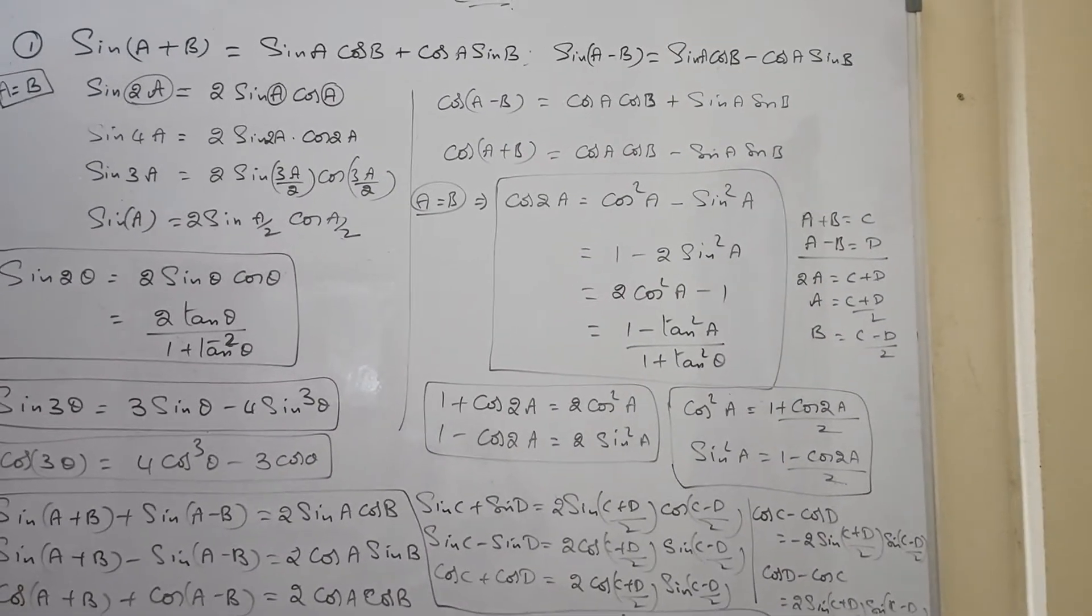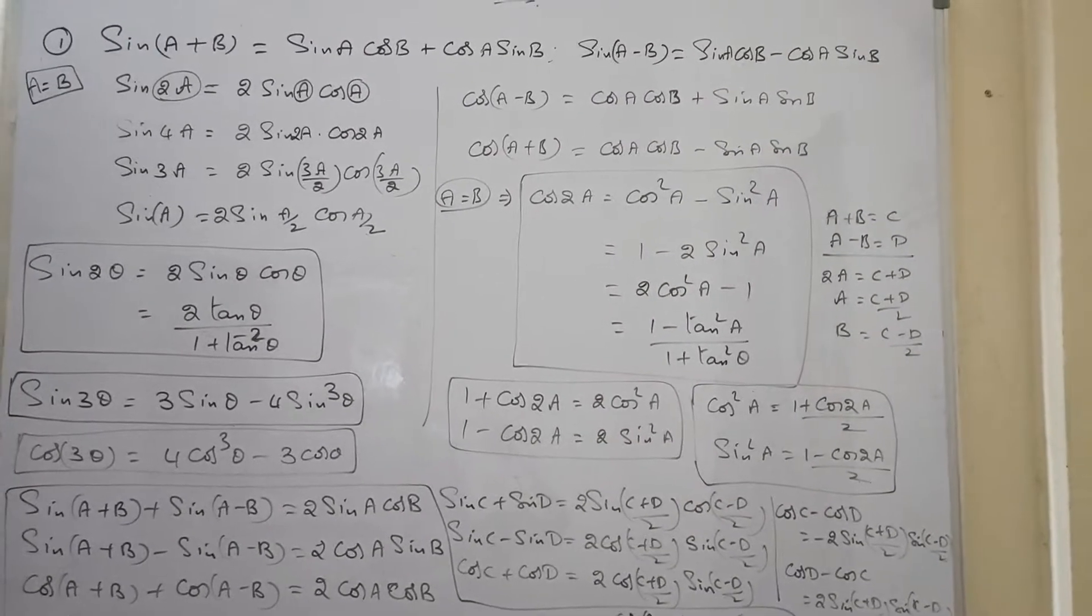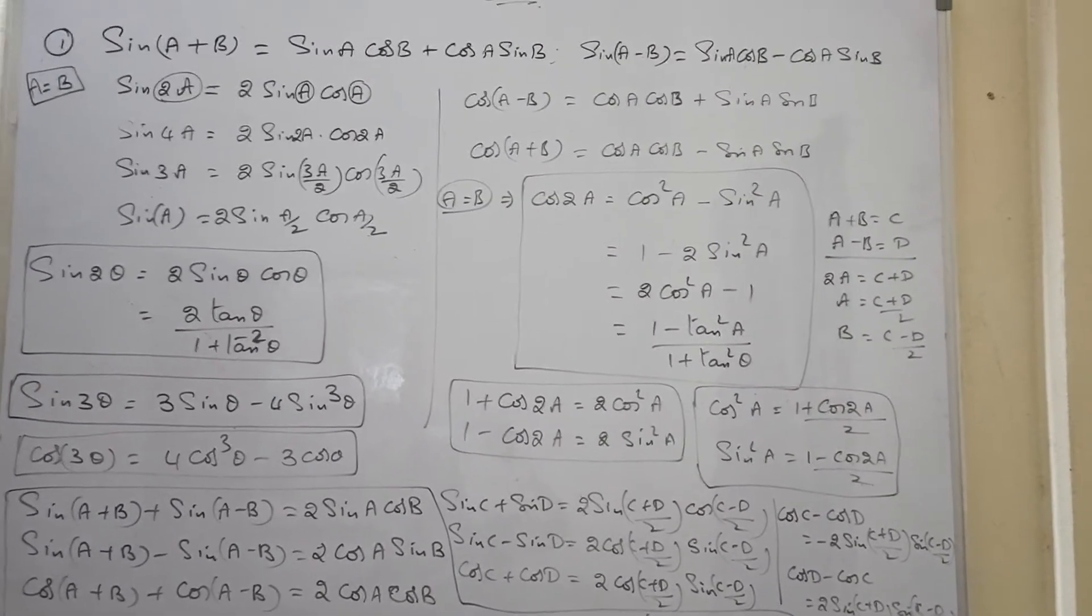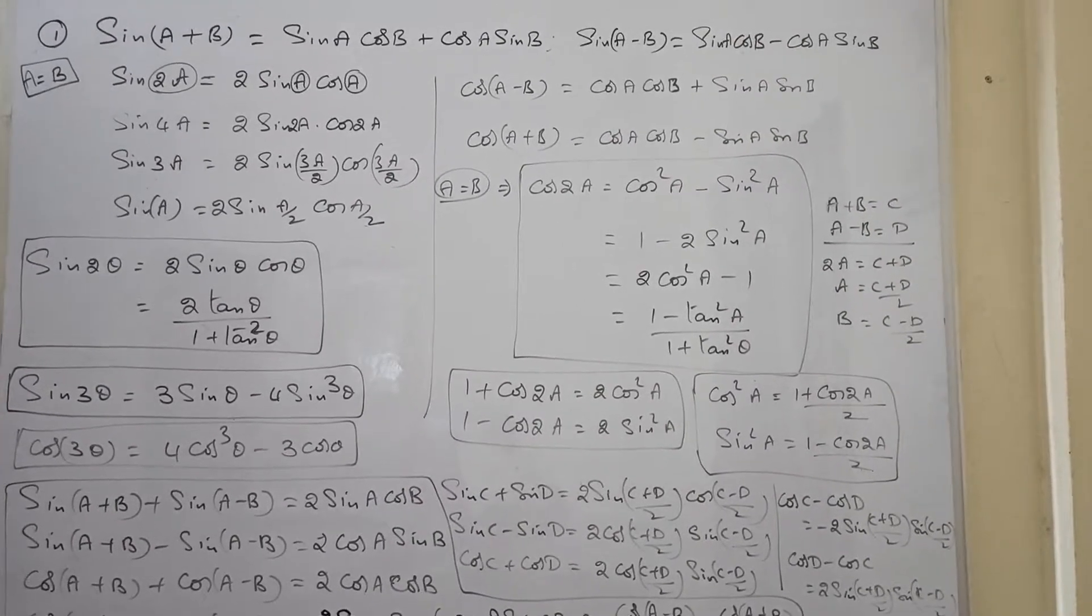Similarly, we can write sine 4a, sine 3a, and sine a in the same way. Cos of a minus b and cos of a plus b formulas are there. If a is equal to b, we will get the formula for cos 2a.